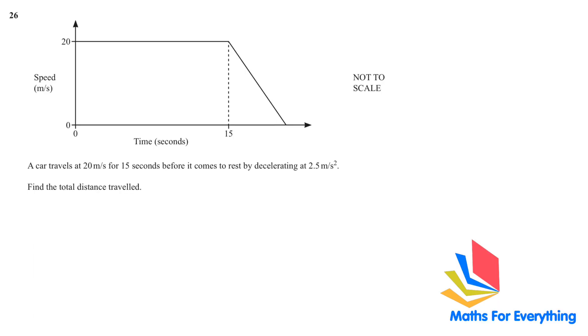Question number 26 is a speed time graph question. Let's read the question. A car travels at 20 meter per second for 15 seconds. So, this is it. Before it comes to rest by decelerating at 2.5 meter per second square. Find the total distance traveled. The total distance traveled in a speed time graph is the area under the curve. To find this area, we need to find this point here.